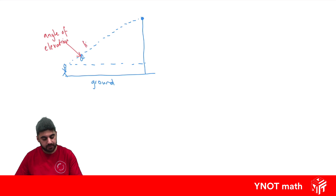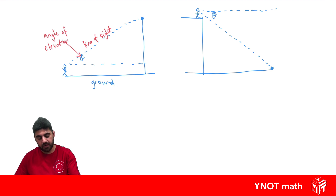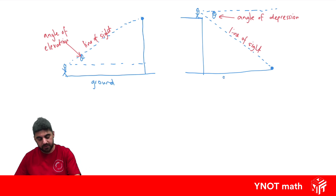This line here is your line of sight. Let's do another diagram. This time you're up here looking down at something over here. First you start off looking straight, then you look down at it. The angle in between the horizontal and your line of sight we call the angle of depression. And this is your line of sight, with this obviously being the ground.